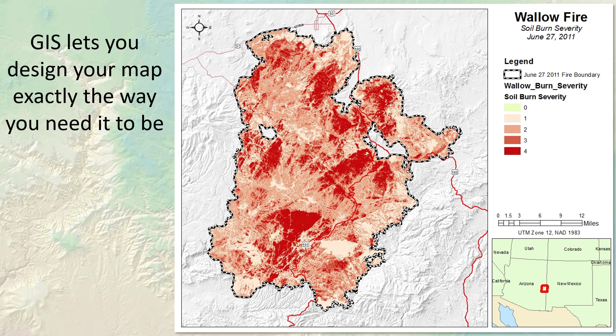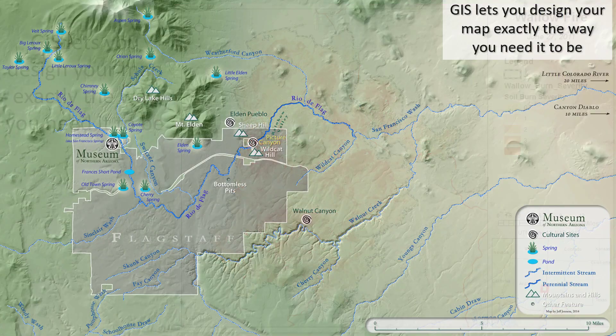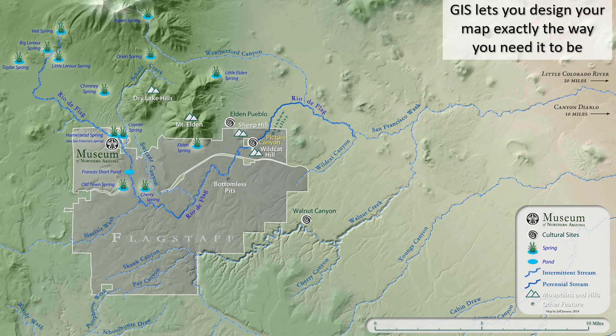Now it's great to be able to do this, but truly this is the least powerful thing you can do with a good GIS. Another example: the Museum of Northern Arizona has a Plateau magazine that comes out periodically, and we wanted to show the greater Flagstaff area and where it's set within the Rio de Flag watershed. We only wanted to show particular things like the shape of the landscape, some major drainages and streams, and a few important locations on the landscape mentioned in the magazine. GIS lets us create this thing exactly the way that we want.